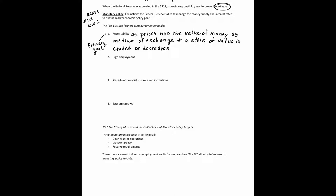The next goal of the Fed is to maintain high employment. At the end of World War II, Congress passed the Employment Act of 1946, which stated that the responsibility of the federal government is to foster and promote conditions for useful employment for those able and willing to seek work, and to promote maximum employment, production, and purchasing power. Price stability and high employment together form what's called the dual mandate of the Fed.